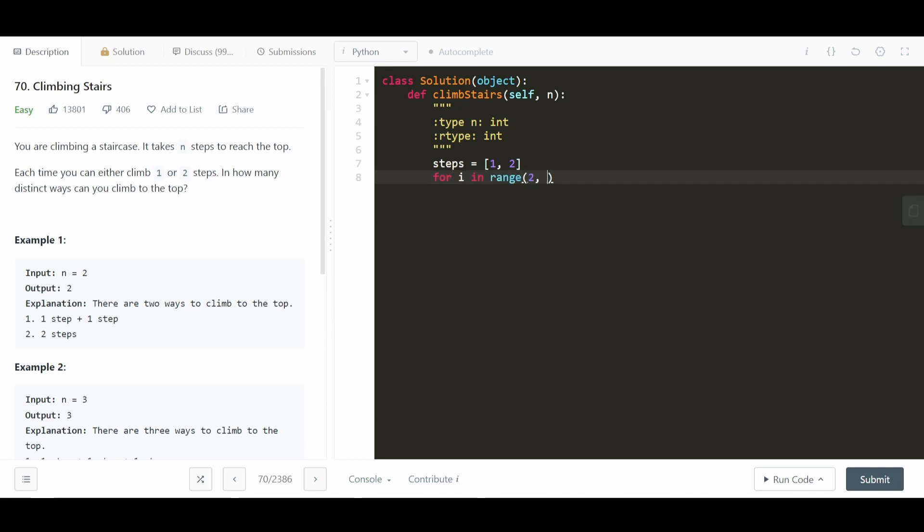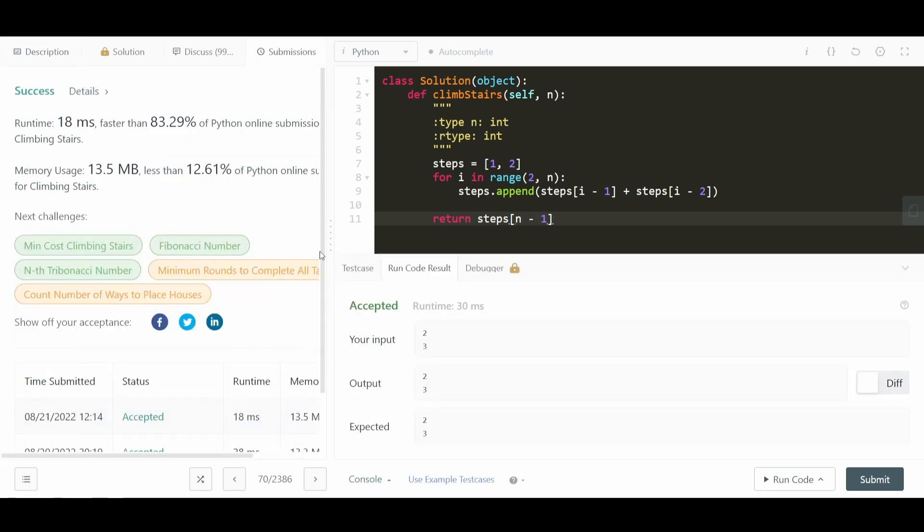So now what we do is we say for i in range, starting from two, which is the index of three, all the way up until n, all we want to do is say steps dot append. So we're just adding a new value to the array. And it's going to be steps at i minus one, plus steps at i minus two. And then at the end, all we do is we return steps at n minus one. And boom, that's it.